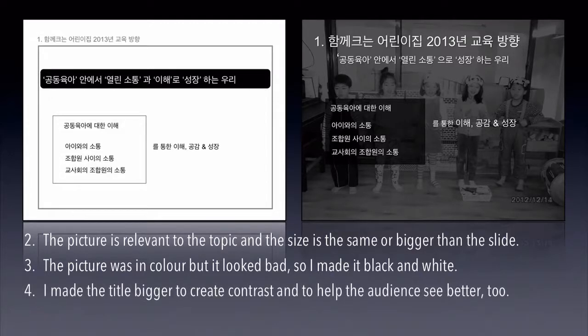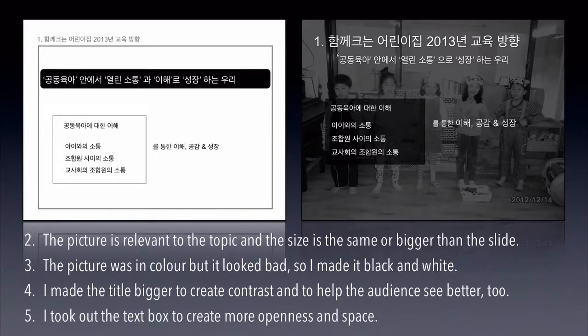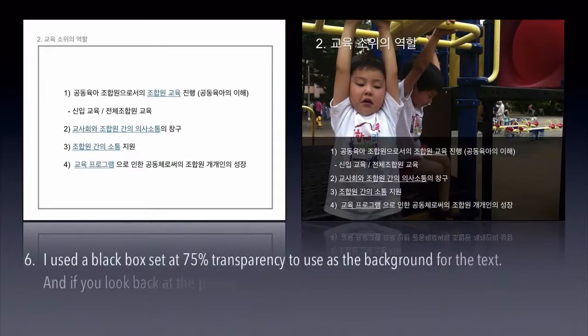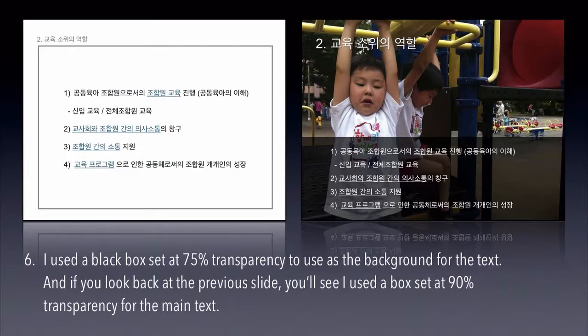Four, I made the title bigger to create contrast and to help the audience see better too. Number five, I took out the text box to create more openness and space. And number six, I use the black box set at 75% transparency to use as the background for the text. And if you look back at the previous slide, you'll see I use the box set at 90% transparency for the main text.